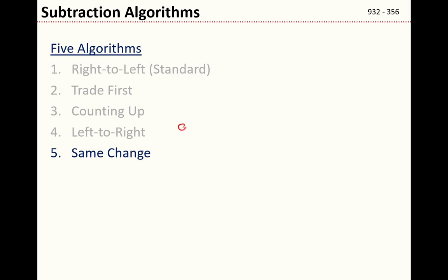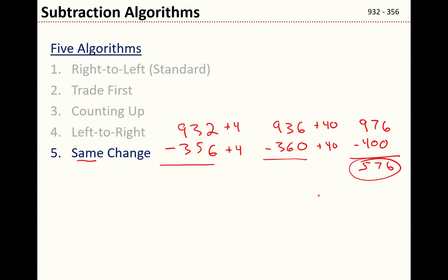Last one, the same change algorithm. 932 minus 356. And the idea here is that I'm going to change the problem until I get an easy problem. And I want to modify the number on the bottom so that it ends in zeros. So to start maybe I'll add 4. So plus 4, plus 4—it's the same change, so I'll add the same number to both. And I get 936 and 360. Well maybe I still don't quite know how to do this, so I want to change that 6 into a 0. I'll add 40 to both the top and the bottom. So this gives me 976 and 400. But now this is a problem I can do, and my answer is 576.